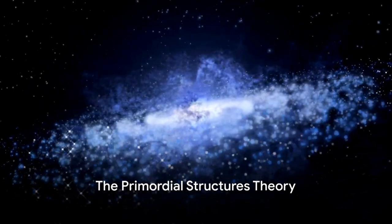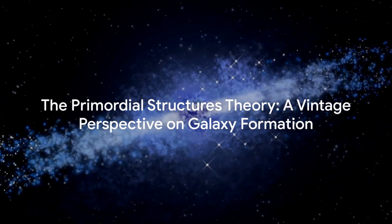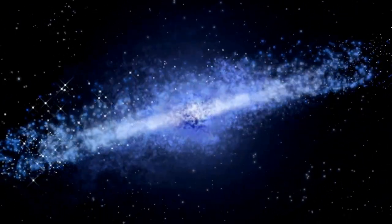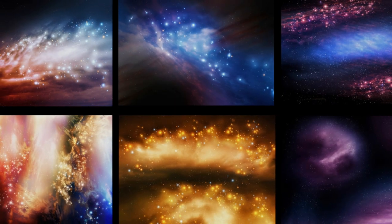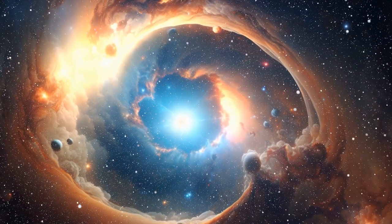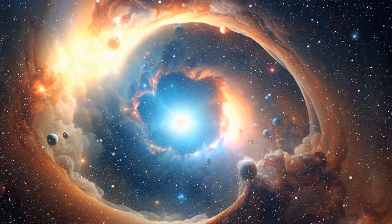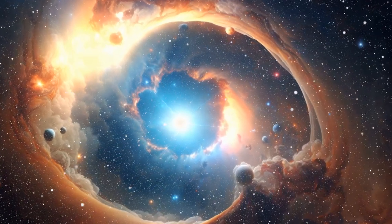The earliest theory takes us back to the time of the Big Bang. This is the primordial structures theory, a vintage perspective on how galaxies came to be. According to this, the early universe was a cosmic soup of sorts, filled with large-scale structures that set the stage for galaxy formation. Imagine the universe as a giant loaf of bread, rising in the oven of cosmic expansion.